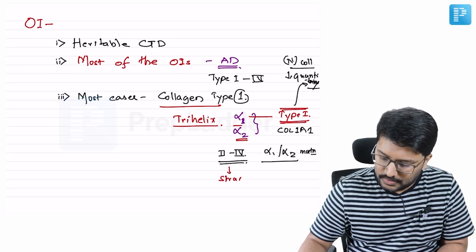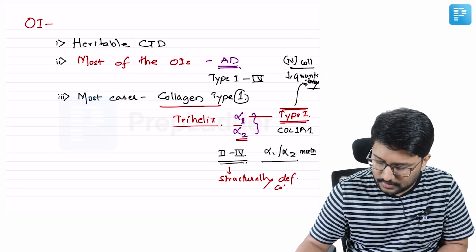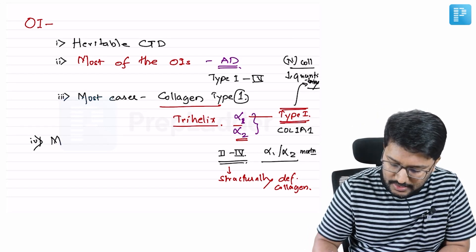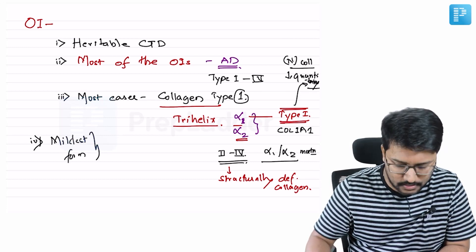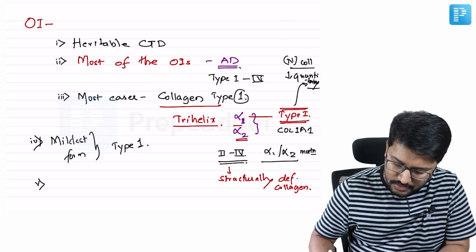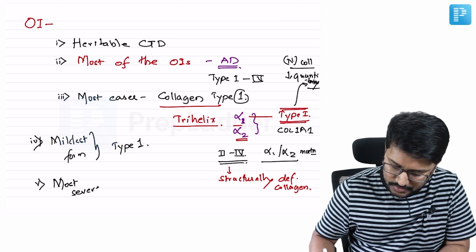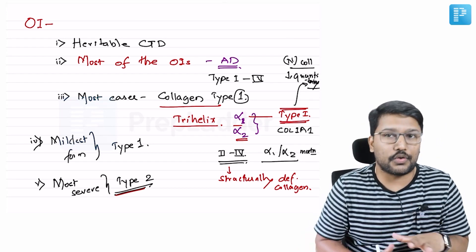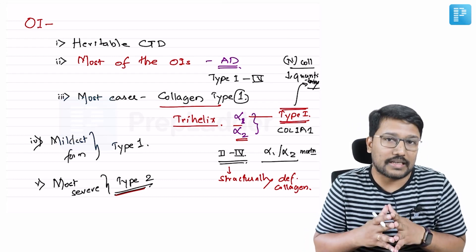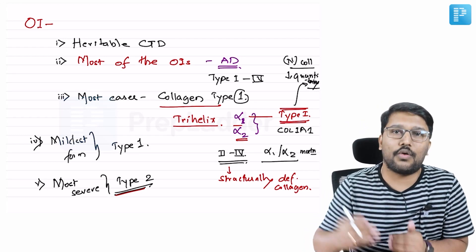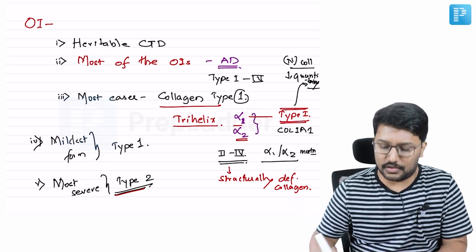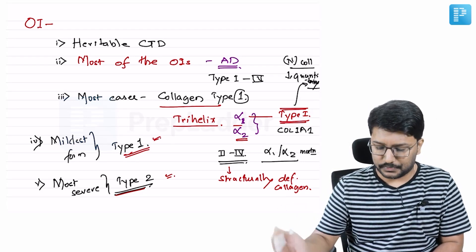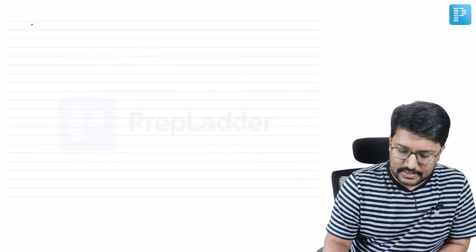Among the four Sillence classes, the mildest form is Type 1 and the most severe form is Type 2. Type 2 is most likely to present with fractures in utero or soon after birth, and most of these patients do not survive beyond the neonatal period. As adult physicians, we typically encounter Type 1, which is the mildest form.